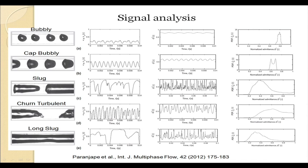From here we go to the slug-annular transition, which people have called the churn turbulent transition. Observing the raw signals, they are extremely erratic. In the probability density function, the two peaks are not evident; the entire curve appears to be a single spread-out curve with a large value of skewness and no definite peak, but it is a spread-out phenomenon at a higher voltage.